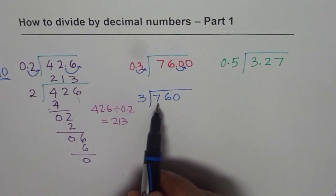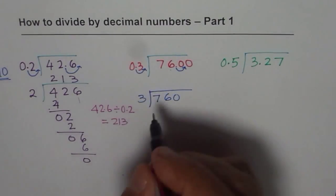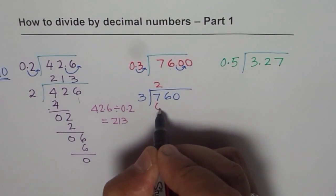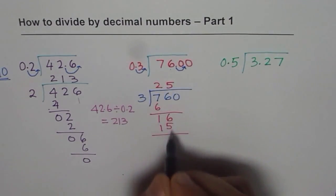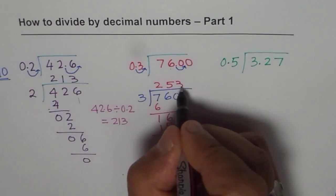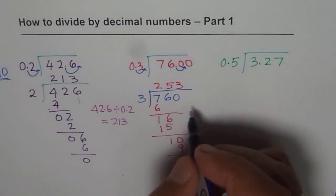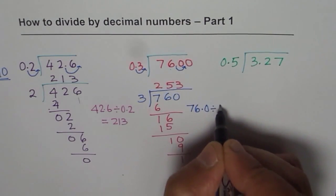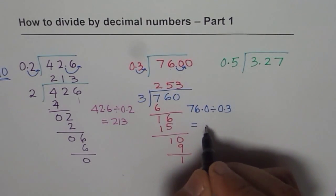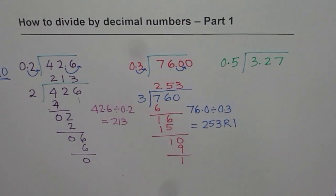Let's do it. So if I divide 760 by 3, what happens? 3 goes 2 times 6, remainder is 1. Bring down 6, 3 times 5 is 15, remainder is 1 again. Bring down 0, 3 times 3 is 9, remainder is 1. And so we can write down our answer for this particular question, and that is 76.0 divided by 0.3 is indeed equal to 253 remainder 1. So that is how we can do.